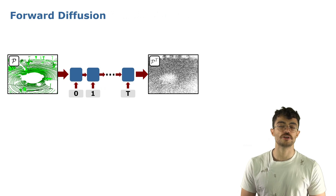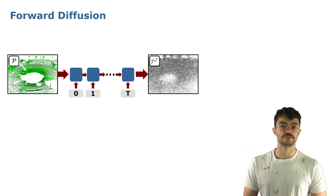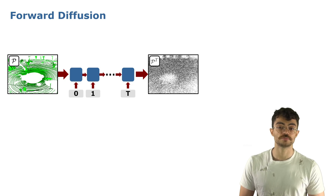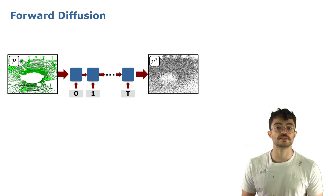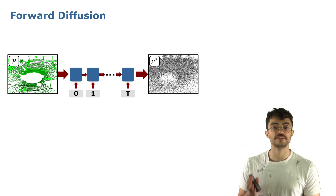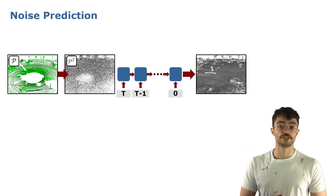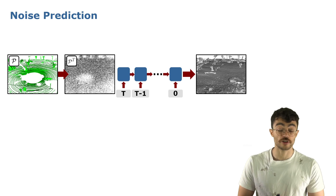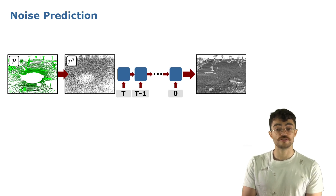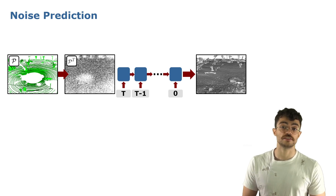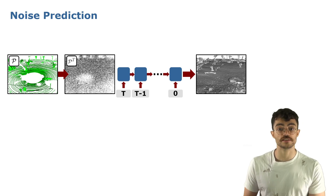To give a quick background on diffusion, we first define a fixed number of T denoising steps. During the forward diffusion, step by step, we sample the noise and iteratively add this noise to the data. Then we train a model to learn the inverse process, predicting the noise added at each step and removing it from the data, such that in the end we arrive at a complete scene representation.